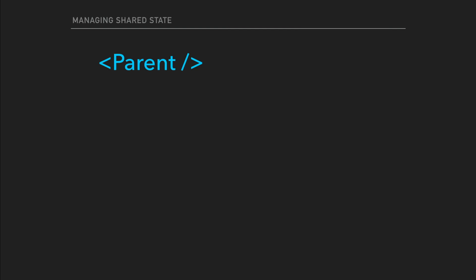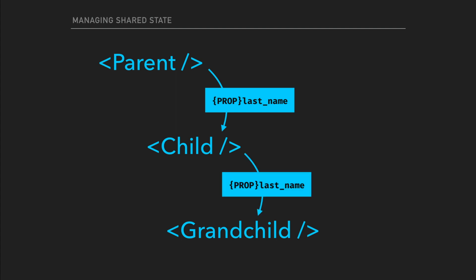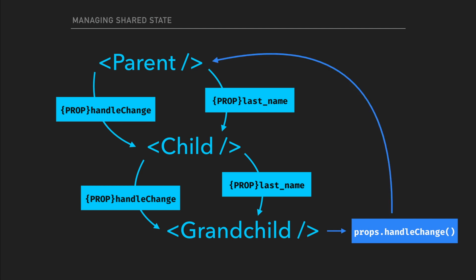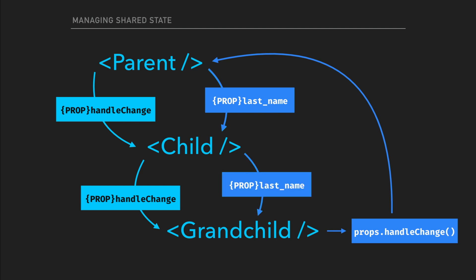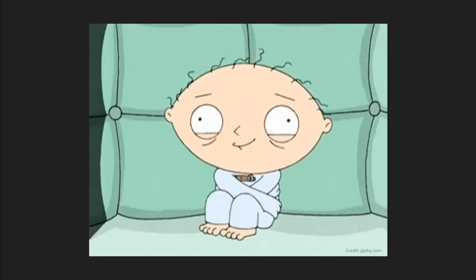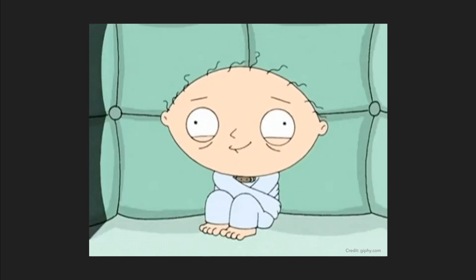How might that look? Let's say we have a parent component, and that parent has a child component. We want to pass down a last name to the child so that child can use that property. But let's say the child has a grandchild as well — we have to pass that property down to the grandchild too. And if the grandchild needs to update that last name, we have to pass down a handle change method to the child, which in turn the child passes to the grandchild. So the grandchild can call that handle change method, pass a new value, which then calls handle change on the parent, and we get that property updated down the chain. You quickly realize this gets a little bit crazy — it gets really frustrating with this convoluted process of trying to share state between multiple components.